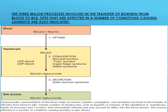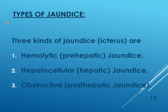Based on the pathophysiology of heme catabolism and jaundice, jaundice is classified into three kinds: pre-hepatic (hemolytic jaundice) — causes are in the blood; hepatic (hepatocellular jaundice) — liver cells are involved; and post-hepatic (obstructive jaundice) — there is biliary obstruction.